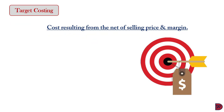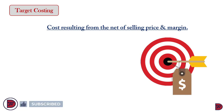Moving on to target costing. Target costing is the resulting cost estimate arrived at by subtracting a desired profit margin from a competitive selling price. This is the reverse of the conventional costing process, which firstly establishes the cost — estimating material, labor, and overheads — then adds a profit margin or markup to arrive at the selling price.